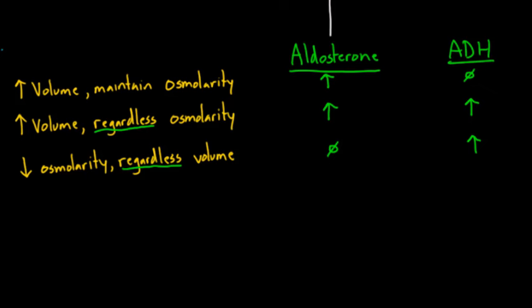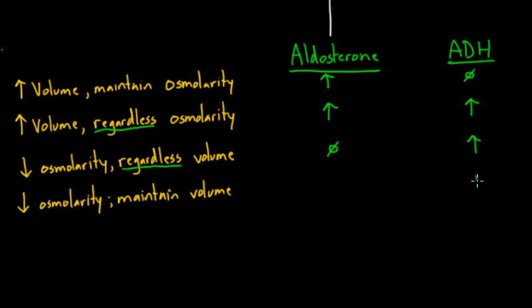The fourth scenario: let's say you want to decrease osmolarity but maintain volume — you don't want it to go up or down. This is a tricky one. To decrease osmolarity, only one hormone will do that — so you've got to start with some ADH. But you know ADH will cause your volume to go up a little bit. If you want to maintain volume, you might have to actually decrease aldosterone just a little smidge, and that would maintain your volume. You can see how the two hormones basically have to work together to get different outcomes.